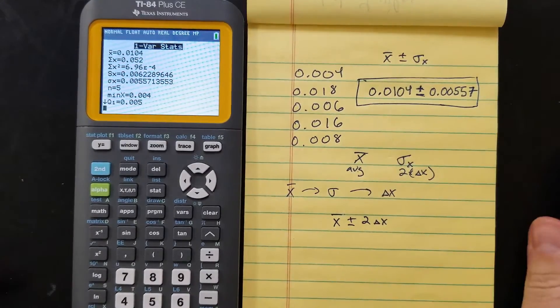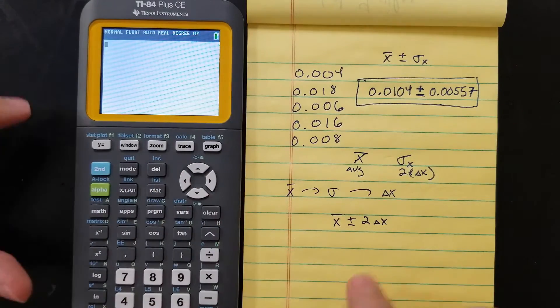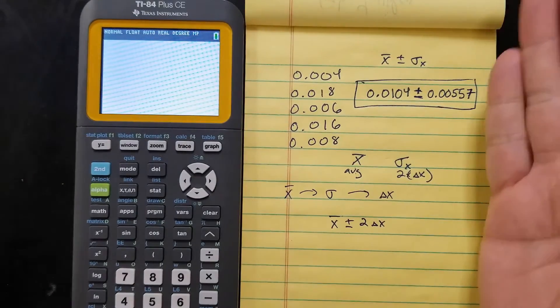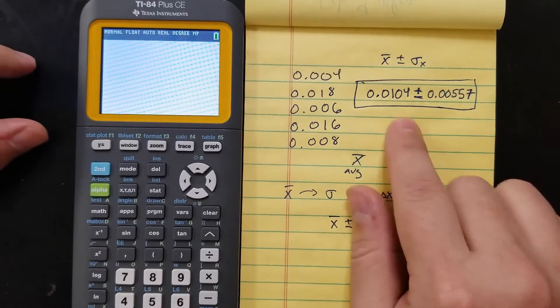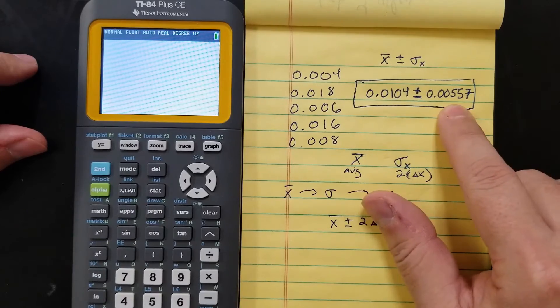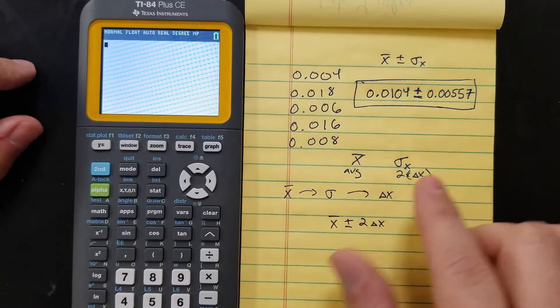So what does this confidence interval mean? Now that I've got it, let's interpret it. This means that my correct answer, or the 95% range of my answer—I'm 95% certain it's going to fall within 0.0104 plus 0.00557 and 0.0104 minus 0.00557.